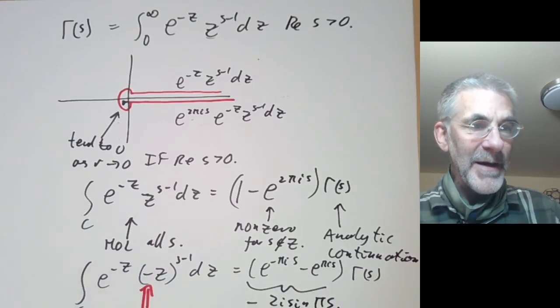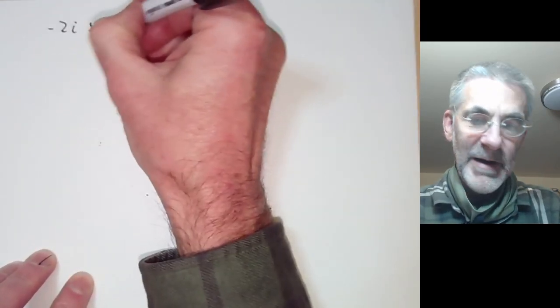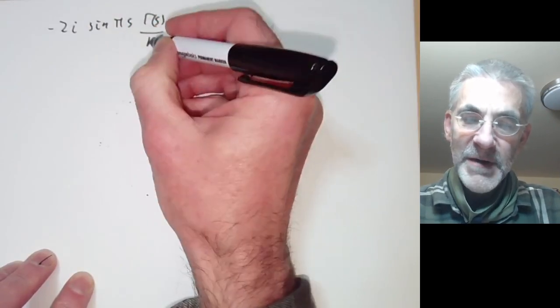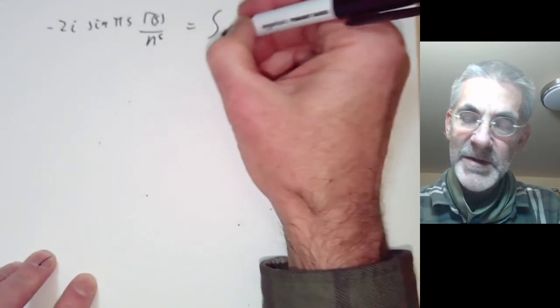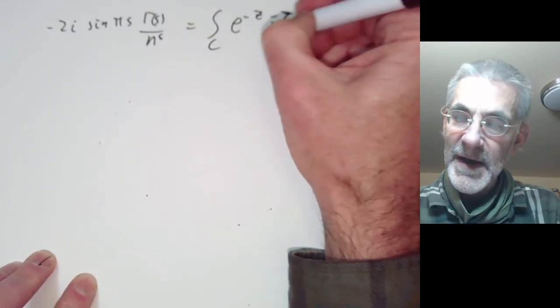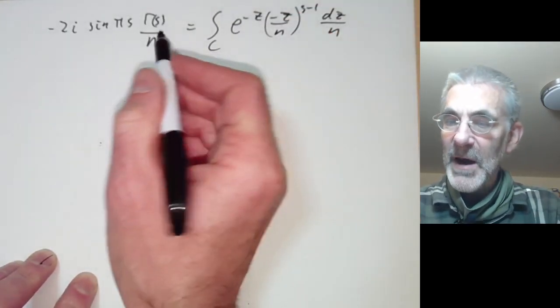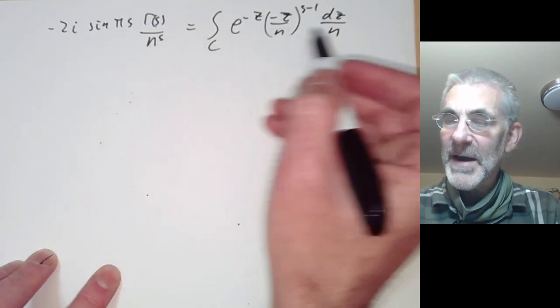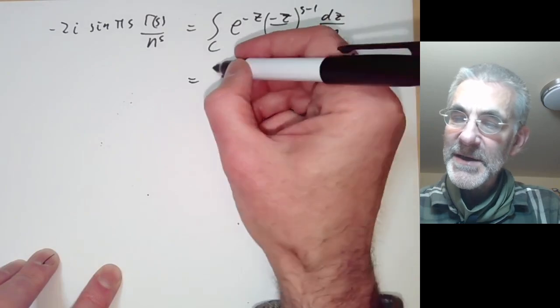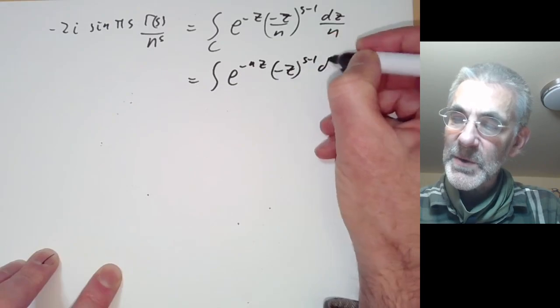Now we apply this to the zeta function. We start with the formula: minus 2i sine(πs) times gamma(s), and we divide by n to the s. This gives the integral over contour C of e to the minus z times (minus z over n) to the s minus 1 times dz over n. We have divided both sides by n to the s, then substitute z with nz, getting e to the minus nz times (minus z) to the s minus 1 dz.